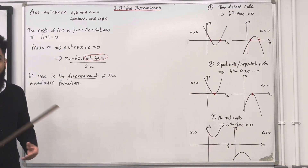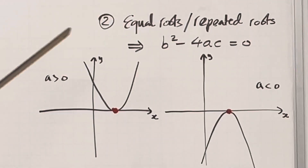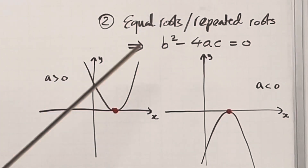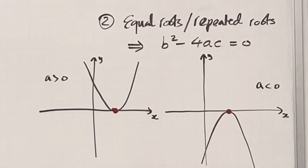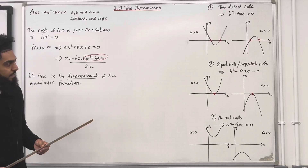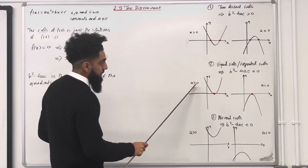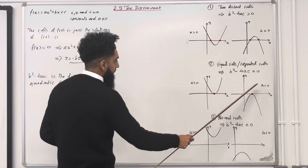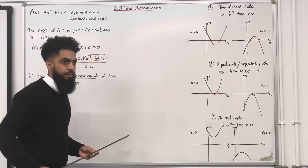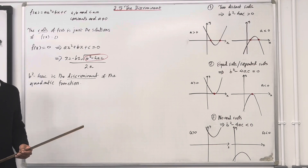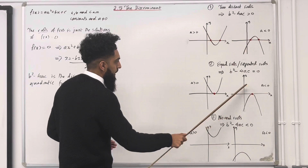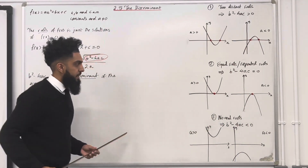Scenario number two: equal roots or repeated roots. When you see this particular wording in the exam, this implies that the discriminant is equal to 0. Graphically, a greater than 0 gives a u-shape, and a less than 0 gives an upside-down u-shape. If the discriminant is equal to 0, the curve will touch the x-axis at a single point, as you can see over here.